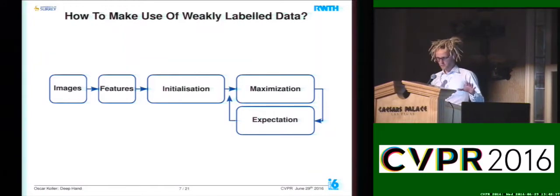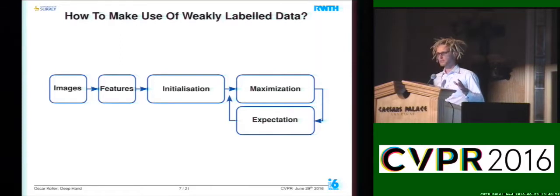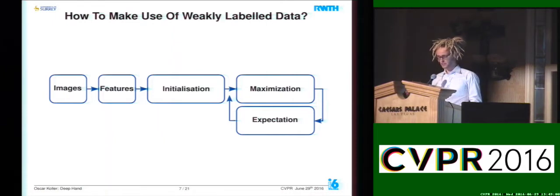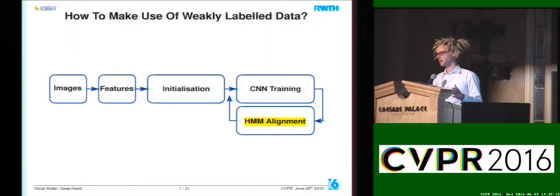The main idea of the algorithm is that given an initialization, we use expectation maximization to iteratively refine our alignment and our model on the data. In terms of initialization, we need some initial frame alignment for our videos. Given that initialization, we perform the maximization step, which is essentially training a CNN, assuming that this data is strongly supervised — but it's not. The second step is using this CNN in an expectation step to perform an HMM alignment on our video data.